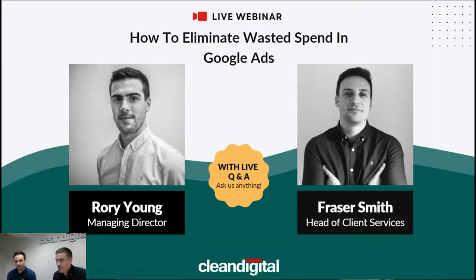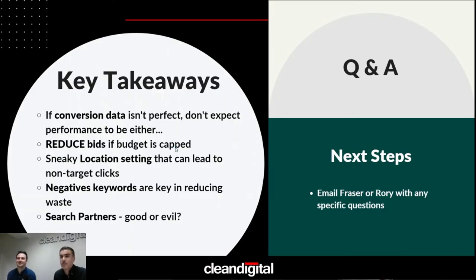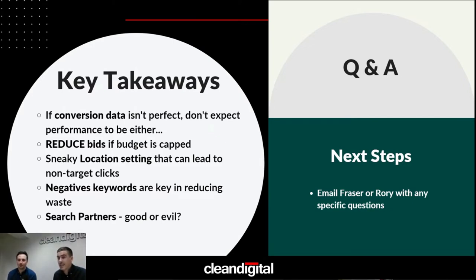We'll send slides through after. In terms of what we're going to go through today, some key takeaways: if conversion data isn't perfect, don't expect performance to be either. Reduce bids if budget is capped — that's quite a reverse one that Fraser will talk you through. There's also a sneaky location setting that can lead to non-target clicks. We'll talk through a negative keyword strategy, because negatives are key to reducing waste, and the age-old question: search partners — good or evil?